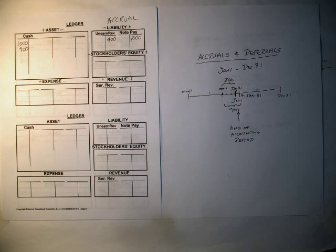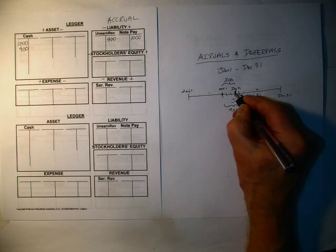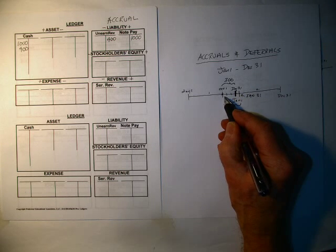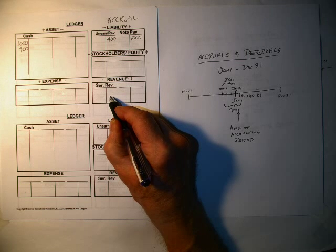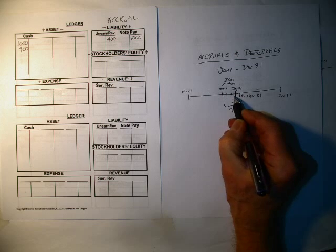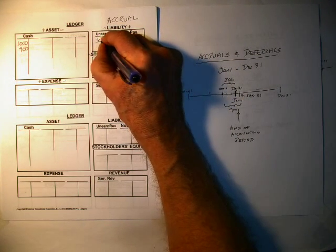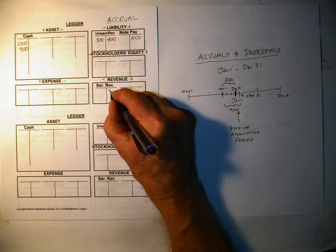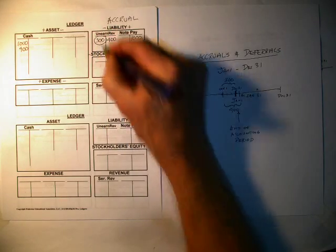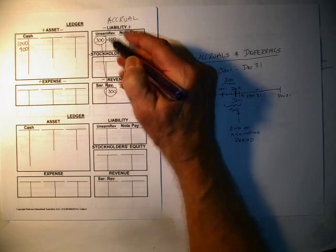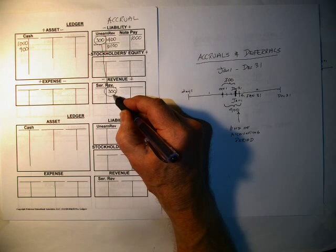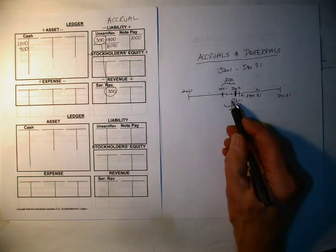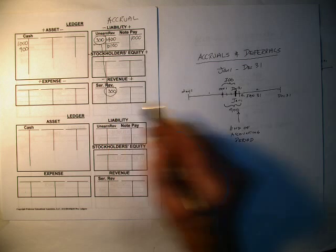Unearned revenue is a liability account where you don't owe the money — you owe the service, whatever you're doing. It's now December 31st, and you can see we have earned the right to $100, $200, $300 of this project, but there's been no entry into the revenue account. So we need to make an adjustment. We've had a gradual accumulation of $300, so we're going to take $300 out of unearned revenue, because we've earned the right to it, and move it down to service revenue — $300. This adjustment corrected the balance here: unearned revenue has a balance of $100, and service revenue has a balance of $300. That's the gradual accumulation of revenue not yet recognized — we recognize it here at the end of the accounting period.